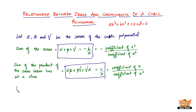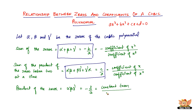The final one would be the product of the zeros. This is nothing but alpha times beta times gamma, which equals negative d by a. This is equal to the negative of the constant term divided by the coefficient of x cubed. You have to know what d and a represent.